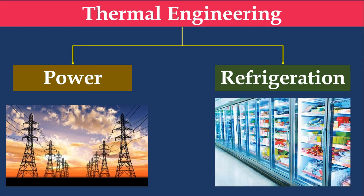One more example: IC engines. For a given compression ratio, what will be the maximum efficiency that can be obtained from the engine? That will be given by Thermal Engineering. And also, take the example of a refrigerator. Given two different temperatures — indoor temperature and outdoor temperature — we can find out the maximum COP of the refrigerator.